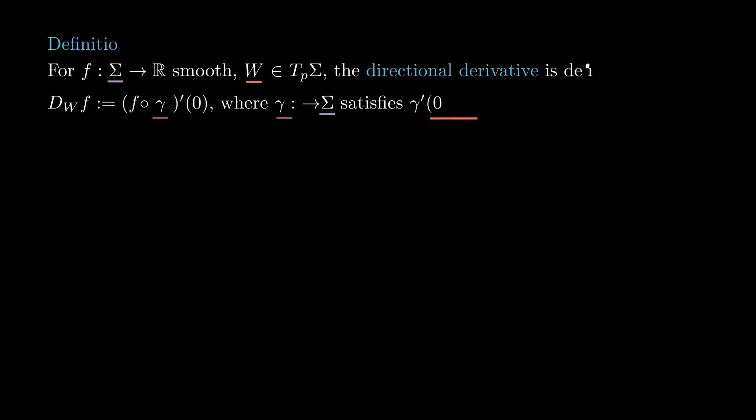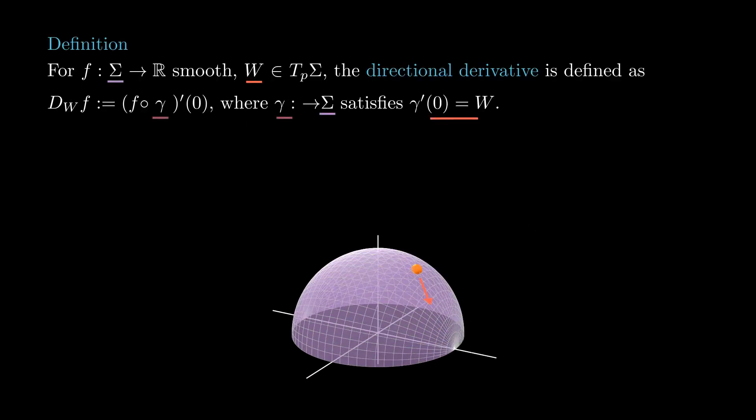Now we can talk about derivatives of smooth functions. For a smooth function f from sigma to rk and the tangent vector w, we take a smooth curve gamma in sigma with gamma prime at zero equal to w. The directional derivative of f in the direction w is defined as the derivative of f composed with gamma at zero.